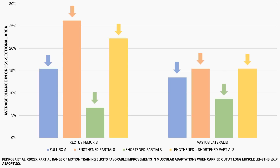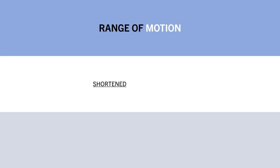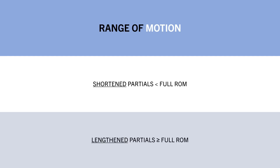To summarize, partial range of motion training is usually going to be inferior if you skip the lengthened part of the exercise — for example, the bottom of a squat. However, if you perform partials in the lengthened range, hypertrophy is likely to be similar or potentially more effective compared with full range of motion training.